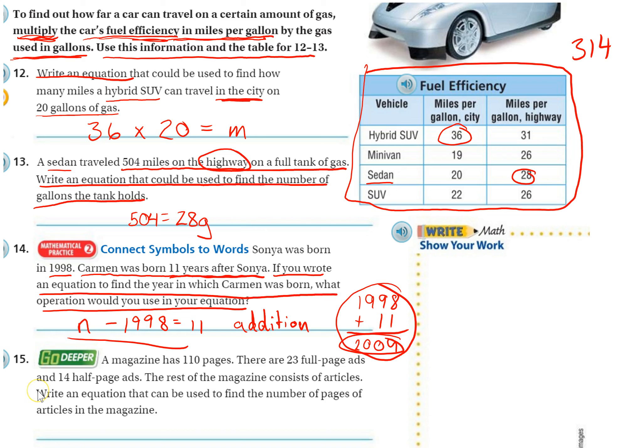Let's go on to number 15. A magazine has 110 pages. There are 23 full-page ads and 14 half-page ads. The rest of the magazine consists of articles. Write an equation that can be used to find the number of pages of articles in the magazine. So we have 110 total pages. Let's just kind of work this out.